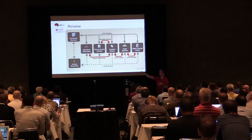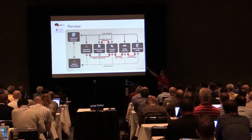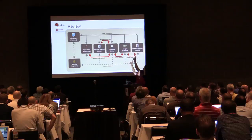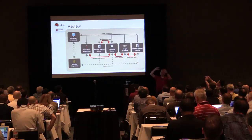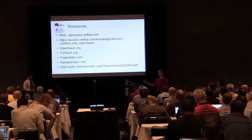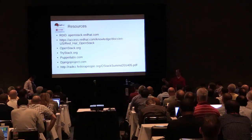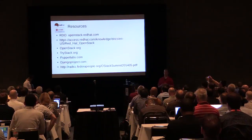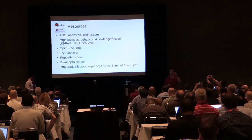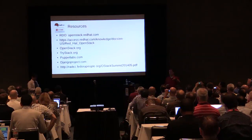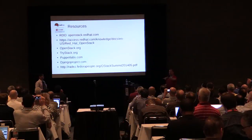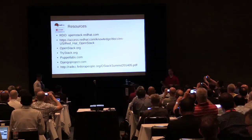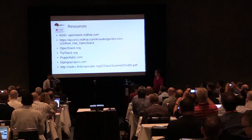A quick review: we started with Keystone for authentication, imported an image into Glance, created networking, launched an instance with Nova, attached block storage via Cinder, and uploaded an object to Swift — all through the web interface. Resources: openstack.redhat.com for RDO community bits, docs for Red Hat OpenStack, openstack.org, TriStack, and the underlying tools Puppet and Django. I'll post the PDF of these slides and also upload to Slideshare. The YouTube video should be up in the next day or two.